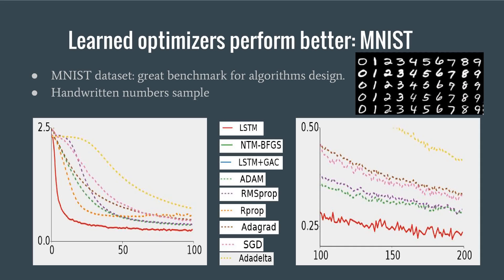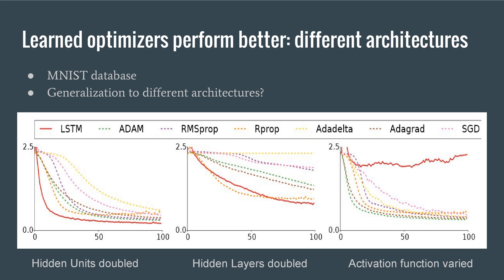The authors test whether trainable optimizers can learn to optimize a small neural network on MNIST and how they can generalize to functions beyond those they were trained on. The left graph shows better performance for learned optimizers with the base network, whereas the right side shows the same results even when run over 200 steps. Robust behavior is seen when changing hidden units or layers.